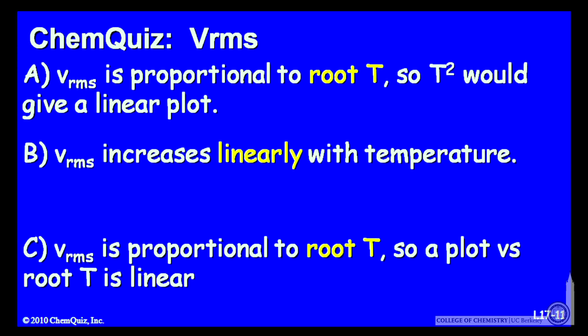B, the root mean squared velocity increases linearly with the temperature. Or C, the root mean squared velocity is proportional to root T, so a plot versus root T is linear. Think about those three explanations and make a selection.